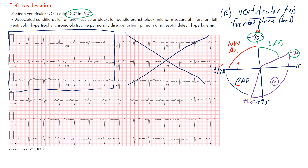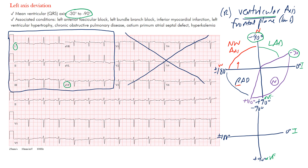How do we find axis? In our framework: zero degrees here, positive 90 degrees, negative 90 degrees, and plus or minus 180 degrees. You need to know where the leads sit. Lead I sits at zero degrees, and lead aVF sits at positive 90 degrees. Focus on leads I and aVF — we're looking at the limb leads and focusing on the QRS complexes to find the ventricular axis.